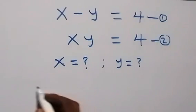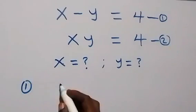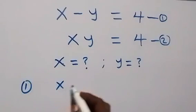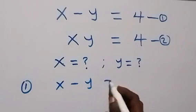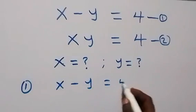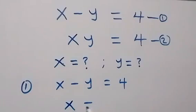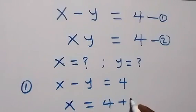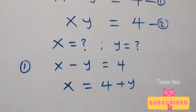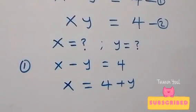From equation 1 here, we have x minus y equals to 4. Then from here, let's take minus y to this side and it becomes plus. So we have x now equals to 4 plus y. So now from here, we can substitute this in equation 2.